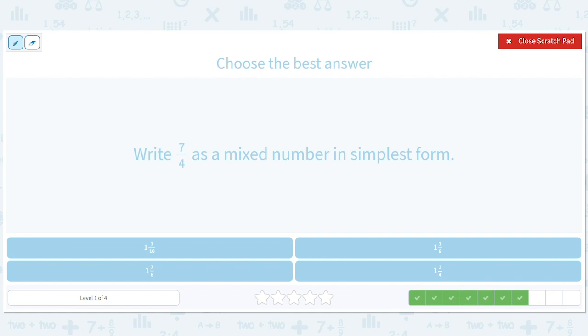Oh, this is the same one, right? So, 7 divided by 4 gives us 1 remainder 3. Oh, it's even the same position, right? So, 1 and 3 over 4. So, 1 and 3 fourths.